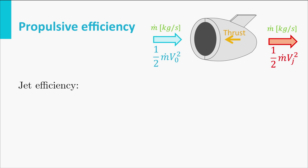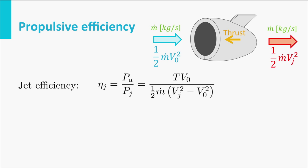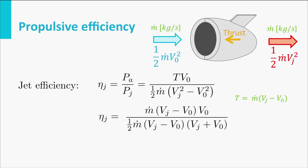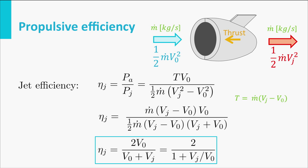Let's look more closely at the jet efficiency equation. We can replace thrust T with m dot times the speed difference. The m dot cancels on both sides, V_j minus V zero factors out, and the half divided by half multiplies by two. This simplifies to two times V zero divided by the sum of the speeds. Dividing both parts by V zero gives us the equation: 2 divided by (1 plus V_j over V zero).